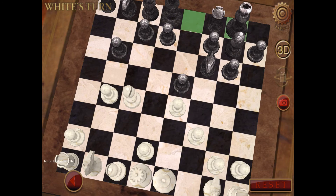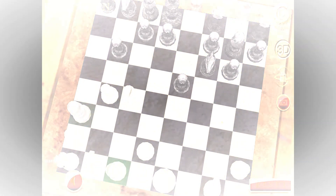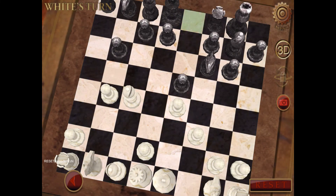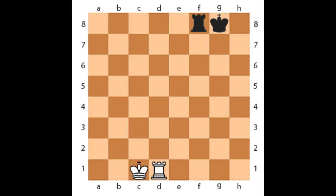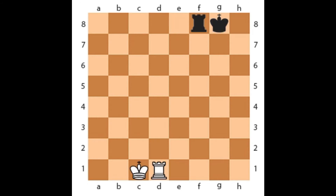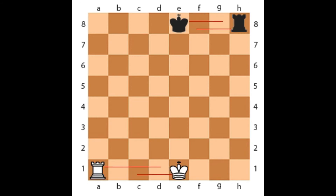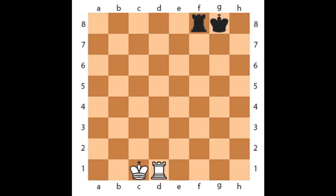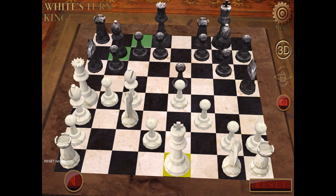Castling is a defensive maneuver. This move allows you to do two important things all in one move. This is a move of the king and either rook of the same color, along the player's first rank, counting as a single move of the king. The king is transferred from its original square two squares towards the rook on its original square. Then the rook is transferred to the square the king has just crossed. The right to castle is lost if the king or the rook has already moved.